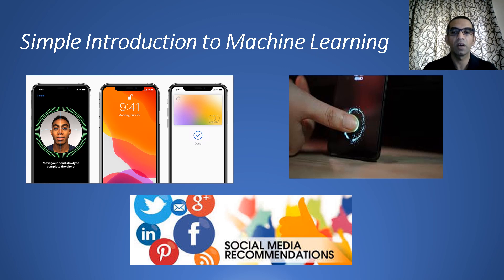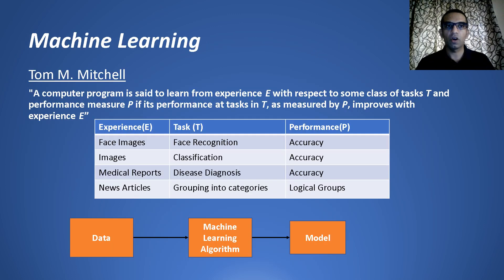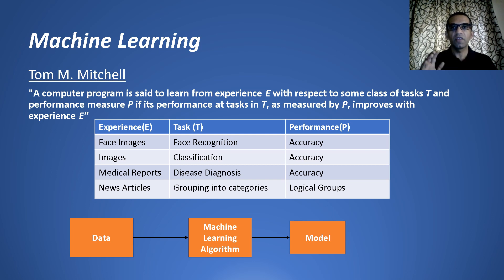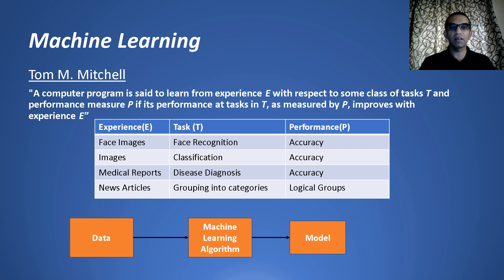Machine learning is a subset of artificial intelligence — a subfield of artificial intelligence. Tom Mitchell from Carnegie Mellon University defines machine learning as: a computer program is said to learn from experience E with respect to some class of tasks T and performance measure P, if its performance at tasks in T as measured by P improves with experience E.